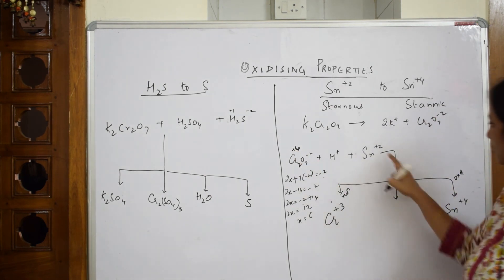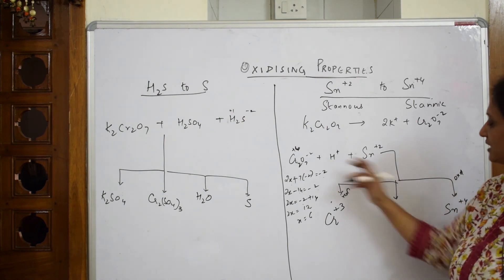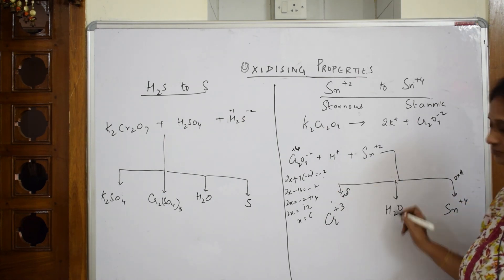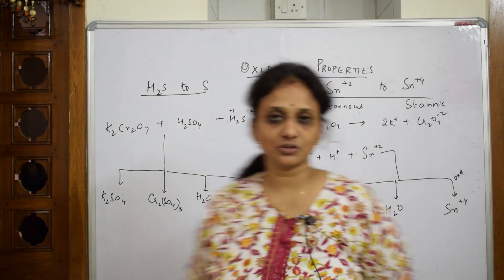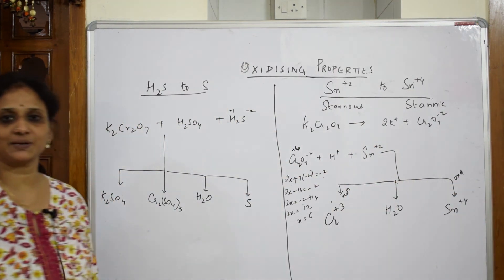Just see. Reduction, what is? Gain of electrons. Oxidation, loss of electrons. And your H⁺ to balance H⁺ we are going to add water. So ionic reaction. Now we are left out with your balancing. Let us balance the reaction.